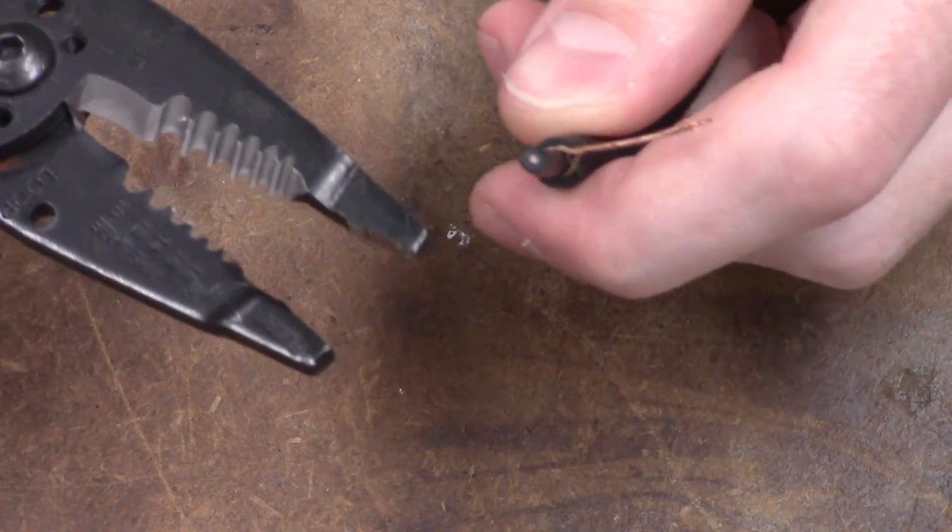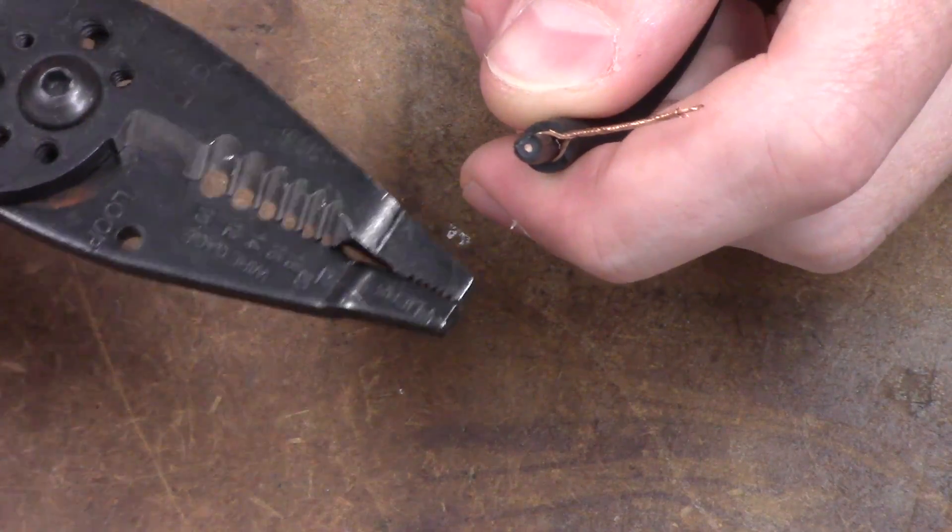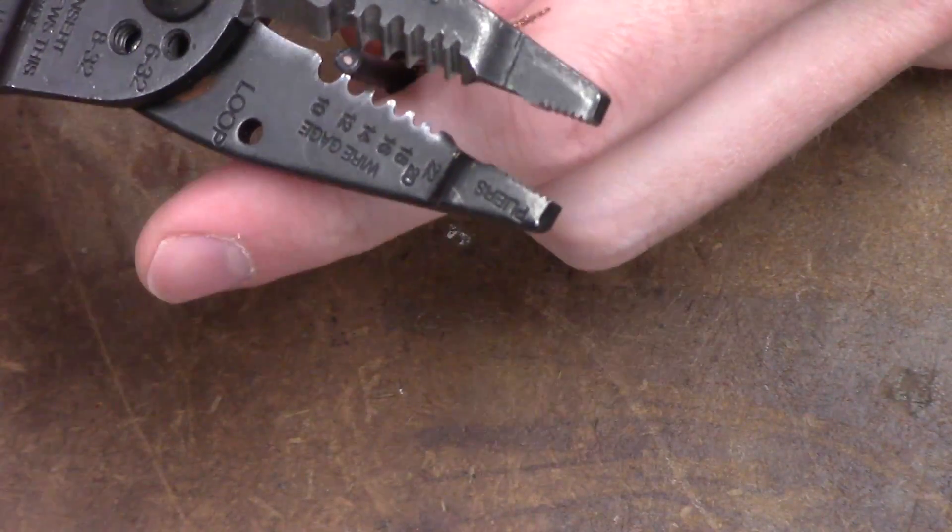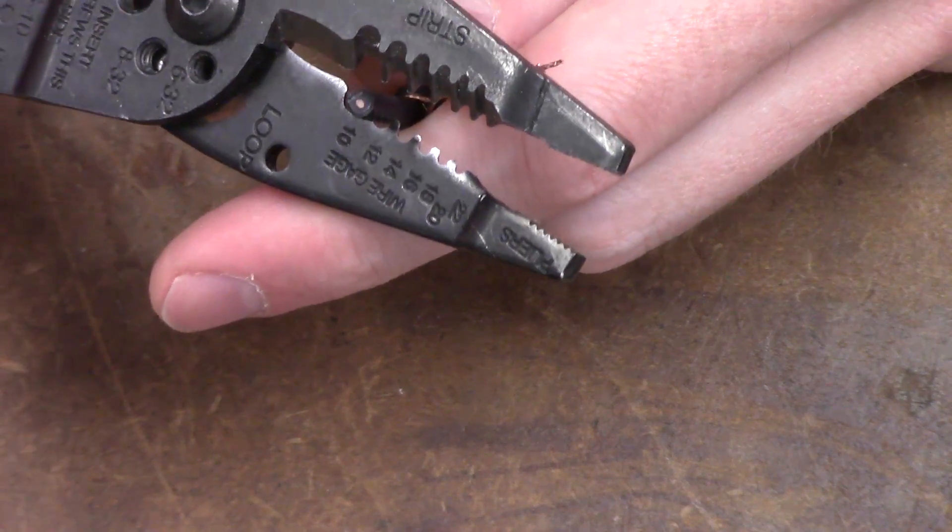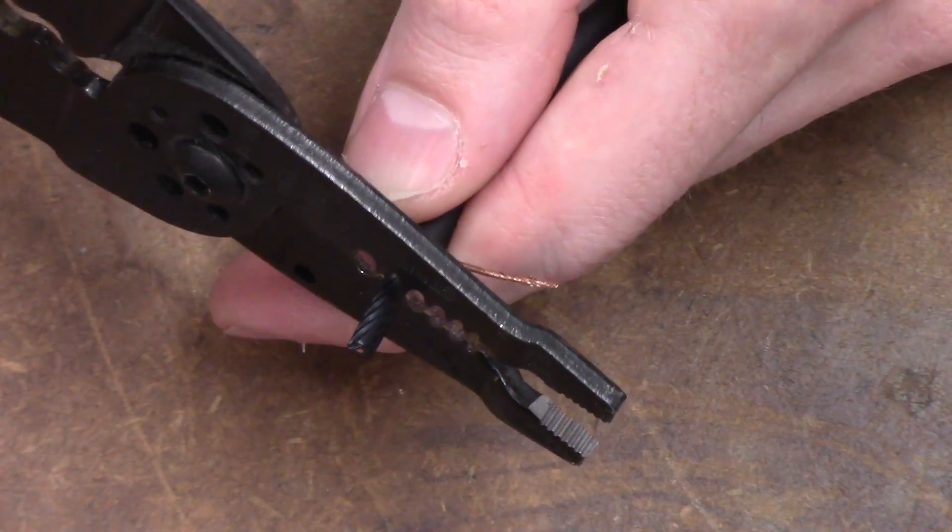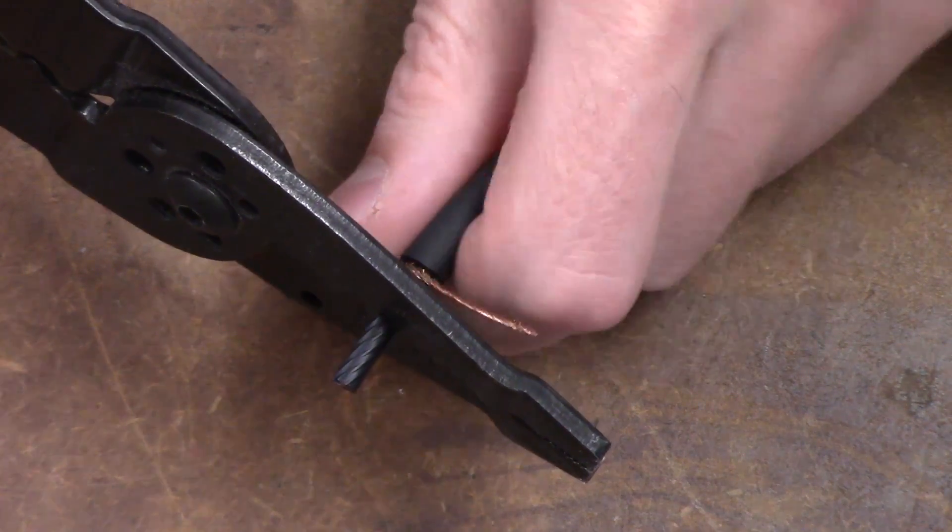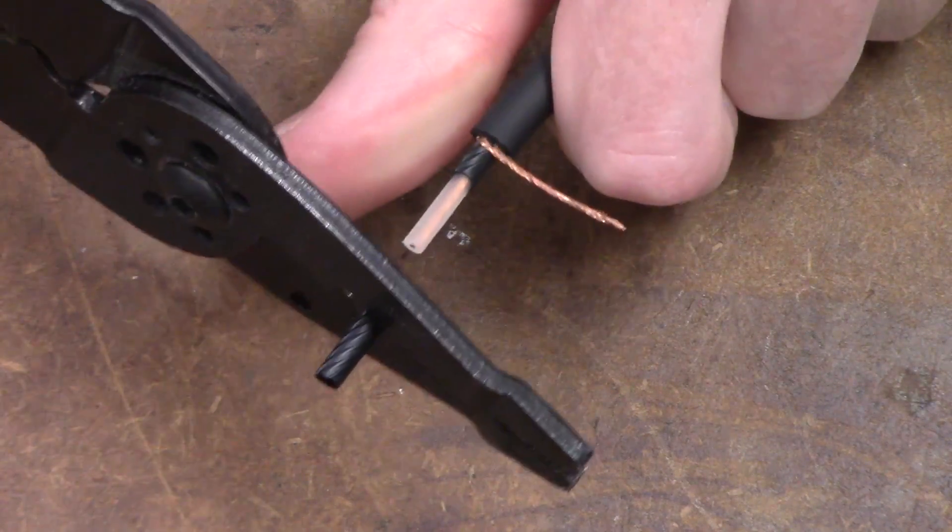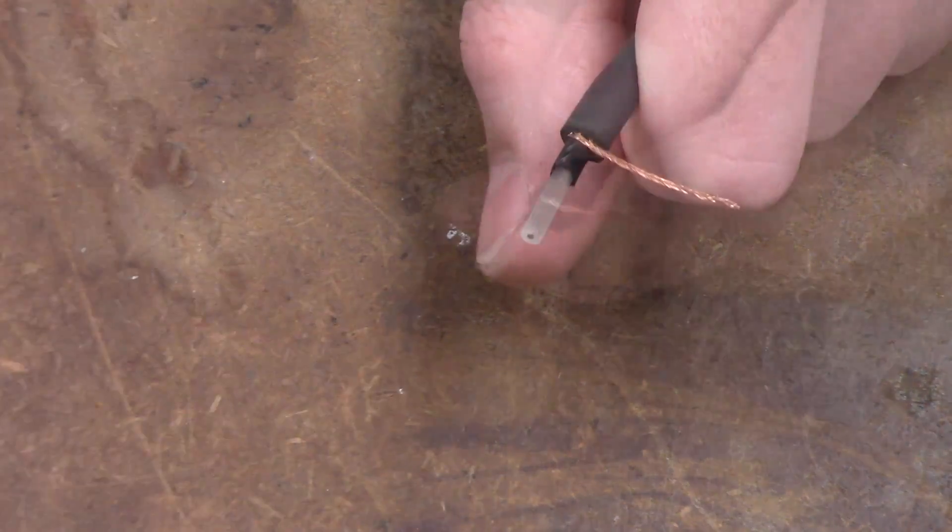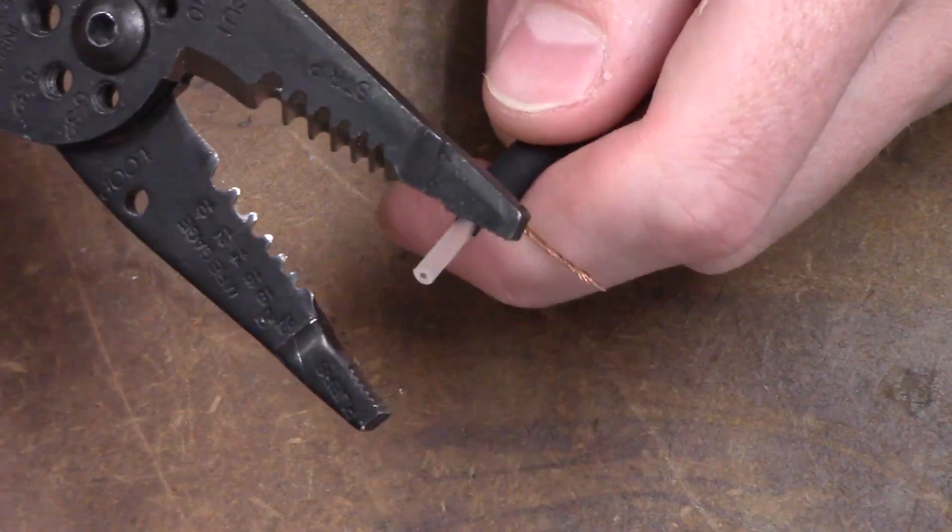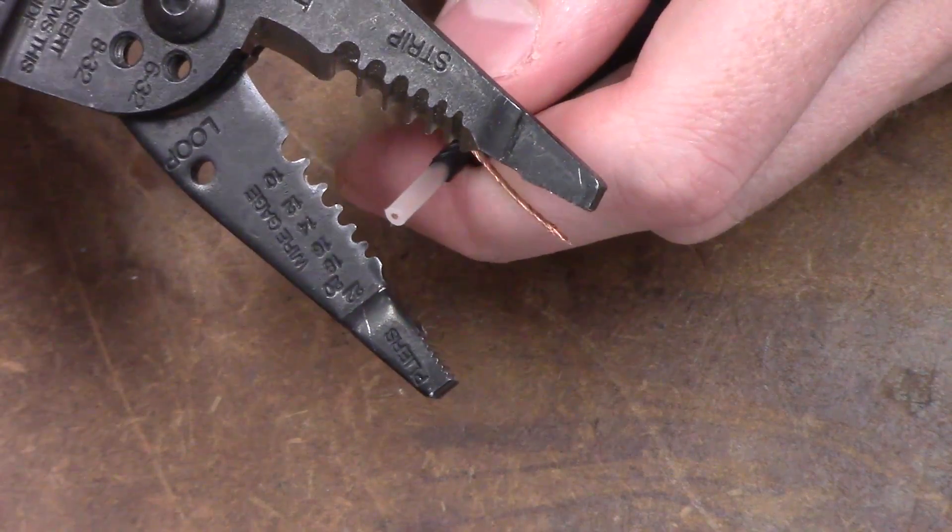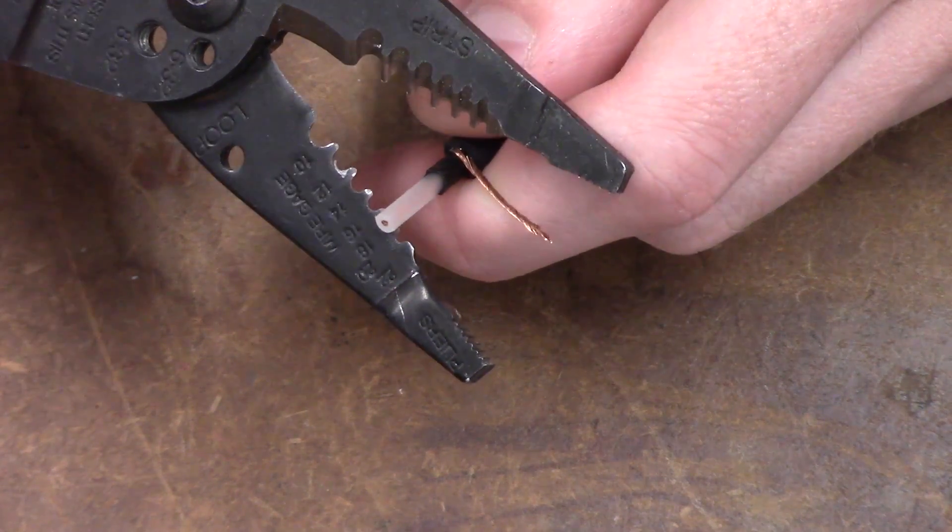Remove part of the electrostatic shield using a pair of wire strippers. The gauge may vary depending on the cable used. In this case, 12 gauge is perfect. Next, remove part of the center insulation. 16 gauge works for this cable.